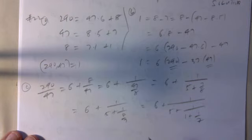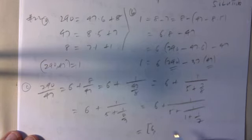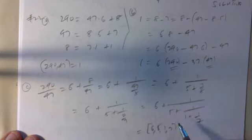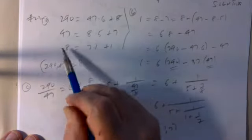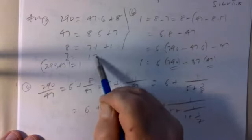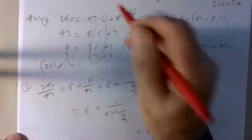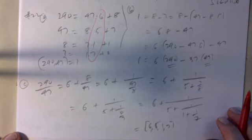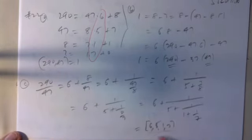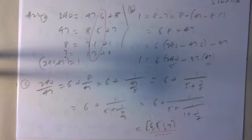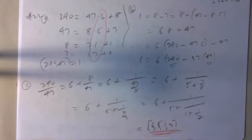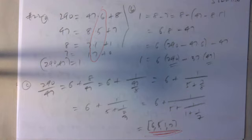For part c, the continued fraction for 290/47: 290/47 = 6 + 8/47 = 6 + 1/(47/8) = 6 + 1/(5 + 7/8) = 6 + 1/(5 + 1/(8/7)) = 6 + 1/(5 + 1/(1 + 1/7)). So the continued fraction is [6; 5, 1, 7]. These are exactly the quotients 6, 5, 1, 7 that appear in the Euclidean algorithm steps.